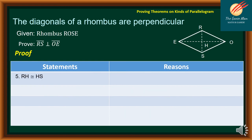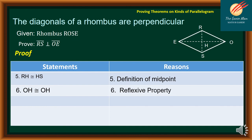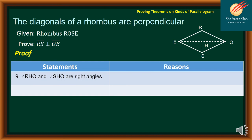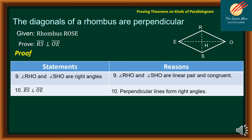Statement 5: RH is congruent to HS — reason: definition of midpoint. Statement 6: OH is congruent to OH — reason: reflexive property. Statement 7: triangle RHO is congruent to triangle SHO — reason: SSS congruence postulate. Statement 8: angle RHO is congruent to angle SHO — reason: corresponding parts of congruent triangles are congruent. Statement 9: angles RHO and SHO are right angles — reason: they form a linear pair and are congruent. Statement 10: RS is perpendicular to OE — reason: perpendicular lines form right angles.